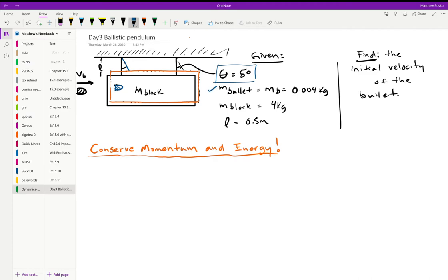We're going to conserve momentum and energy. We're given the mass of the bullet, 0.004 kilograms, the mass of the block, 4 kilograms, and we're given this length right here, 0.5 meters, and it swings up five degrees.